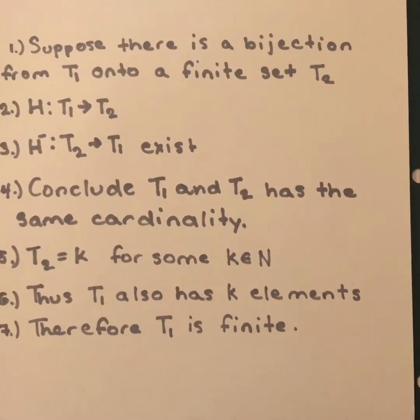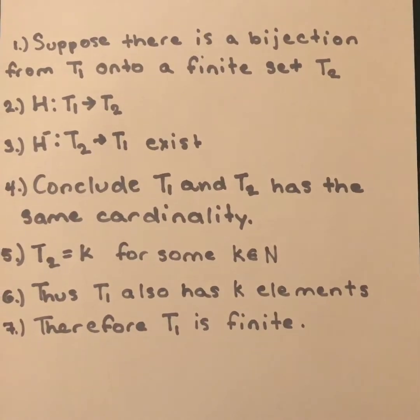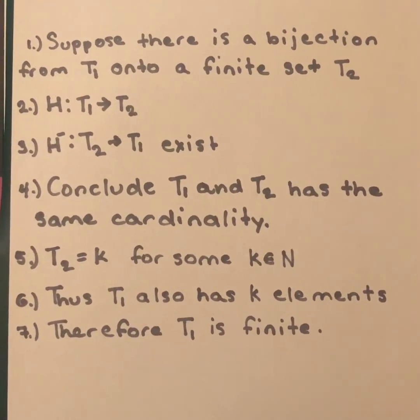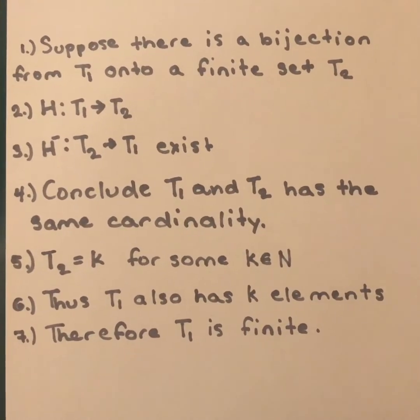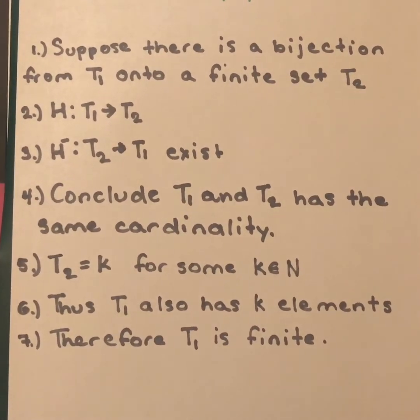So, using the method of double inclusion, now I'm going to prove that if the conclusion is true, then the hypothesis also has to be true. And this is how I proved it. Conversely, suppose there is a bijection from T1 onto a finite set T2.